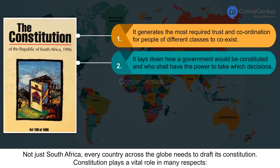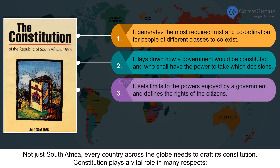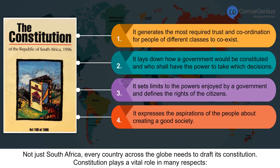Second, it lays down how a government would be constituted and who shall have the power to take which decisions. Third, it sets limits to the powers enjoyed by a government and defines the rights of the citizens. Fourth, it expresses the aspirations of the people about creating a good society.